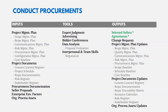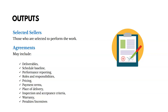The key outputs of the Conduct Procurements process are selected sellers and agreements. Selected sellers are those chosen to perform the work, and agreements are contracts where they promise to deliver and we promise to pay. Those agreements typically include deliverables, the schedule baseline, performance reporting, roles and responsibilities, pricing, payment terms, and so on.